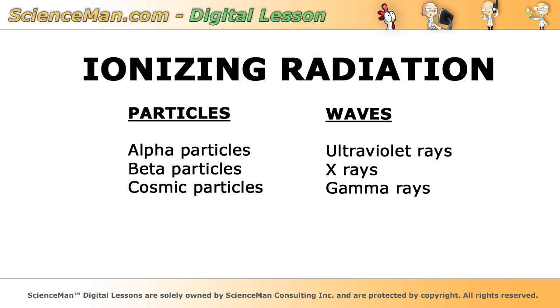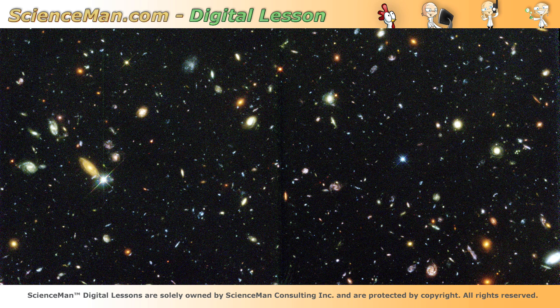What does this ionizing radiation come from? Well, that's probably a lesson in itself, but in short, cosmic particles are energetic subatomic particles that originate from many stellar phenomena in outer space. Most of them are simply fast-moving hydrogen nuclei, and the ones that make it through our atmosphere constitute natural background radiation.